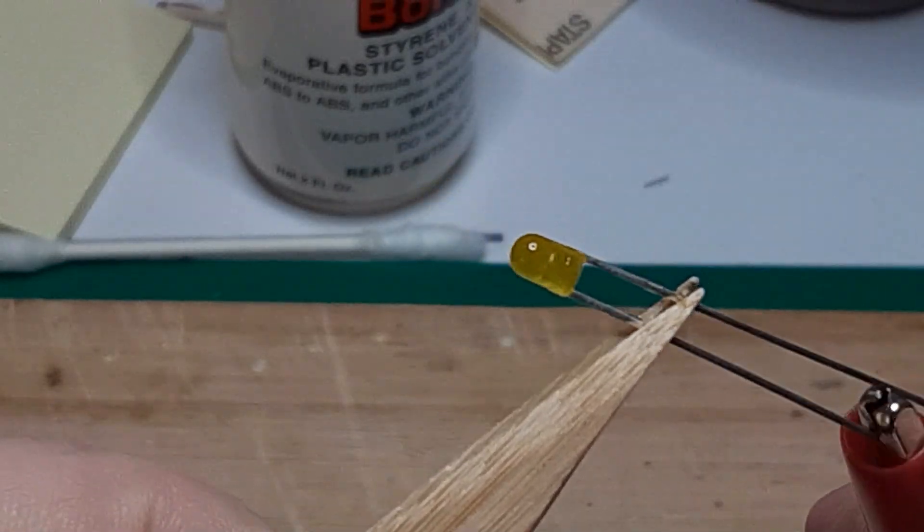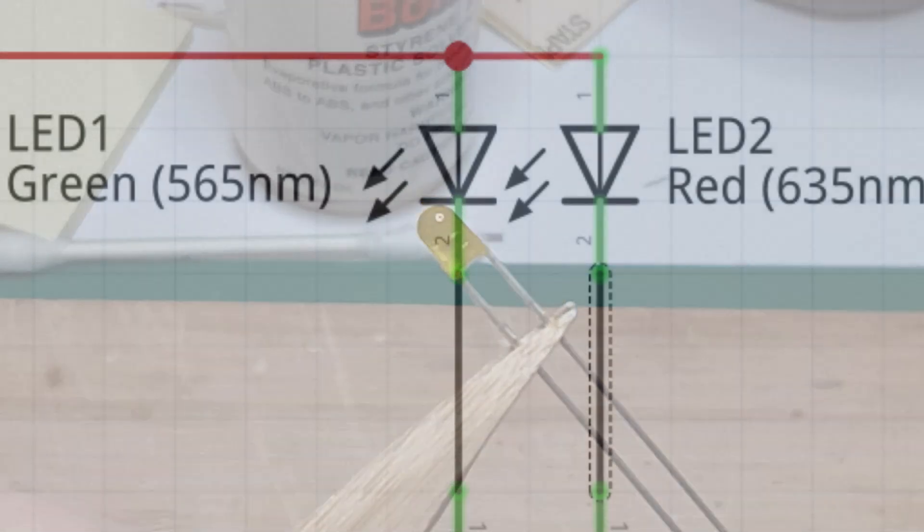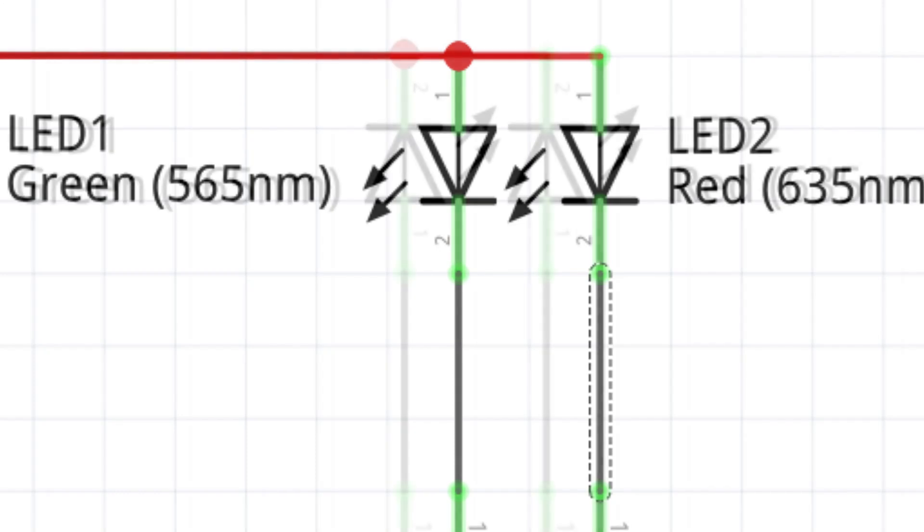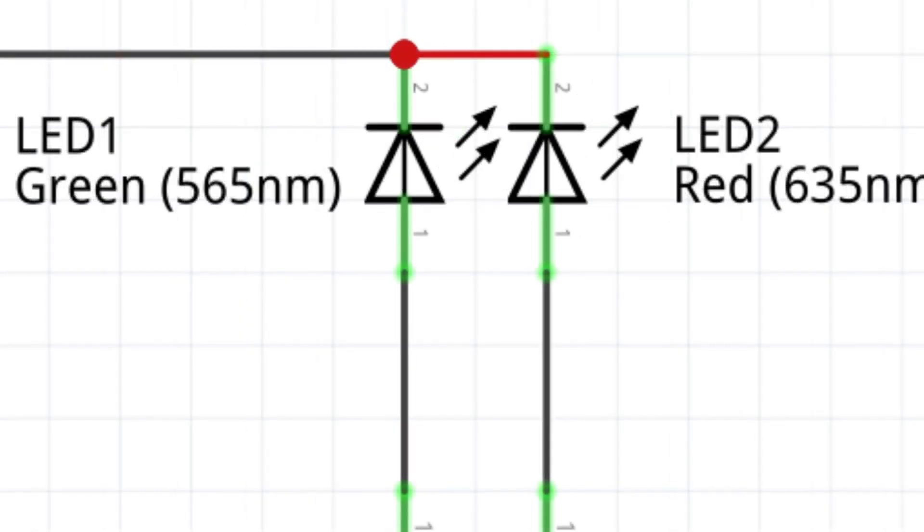When we connect LEDs in parallel, as in railroad signals, we can choose to wire all the anodes together, thus creating a common anode device. We would then connect the common anode to positive voltage, and connect the individual cathodes through a switch to ground. Alternately, we can connect all the cathodes together, creating a common cathode device. In that case, we would connect the common cathode to ground, and connect the individual anodes to positive voltage, again using a switch.